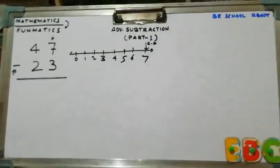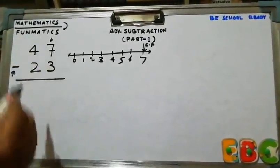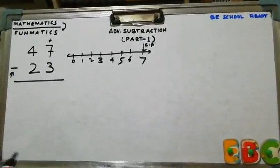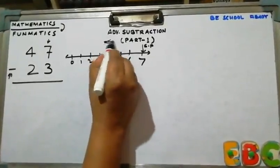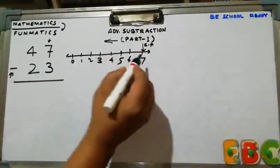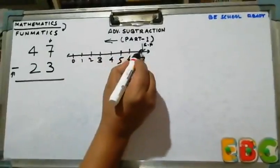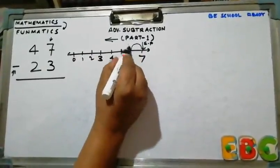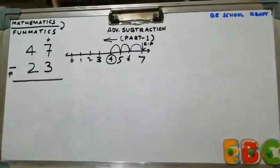This is subtraction. We are going to subtract 3 from 7. 7 is our starting point. So we have to take 3 jumps from here, from the starting point in reverse direction. So take the first jump, second jump, third jump.